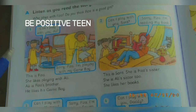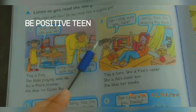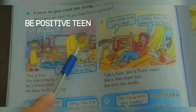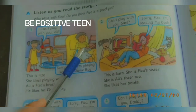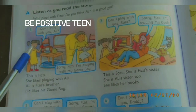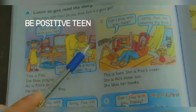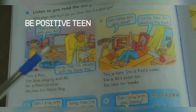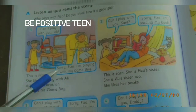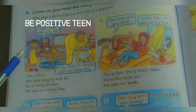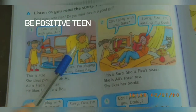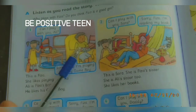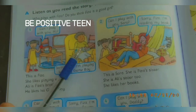In picture number one, there is a girl named Fizza and a boy named Ali. Fizza is asking Ali: Can I play with you, Ali? Ali replies: Sorry Fizza, I'm playing with my game boy. Fizza asked her brother to play but he said he is busy with his game boy.